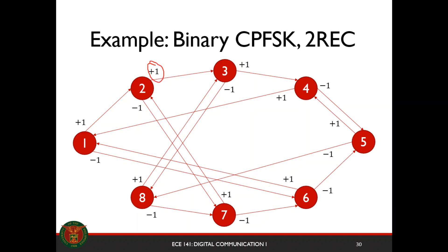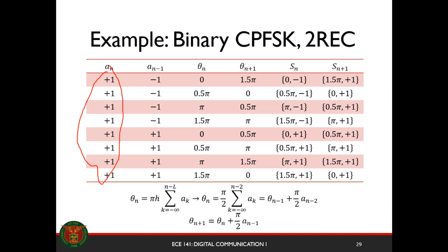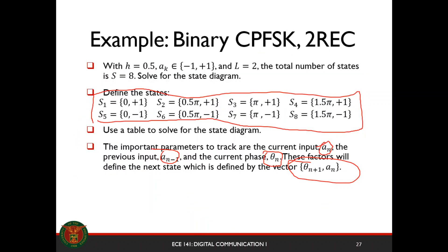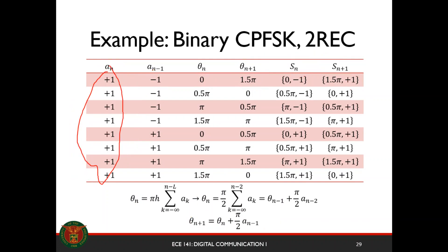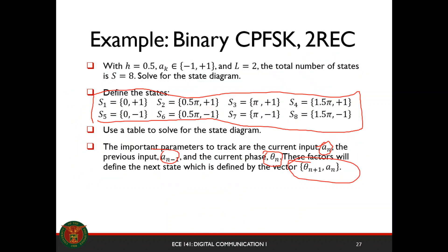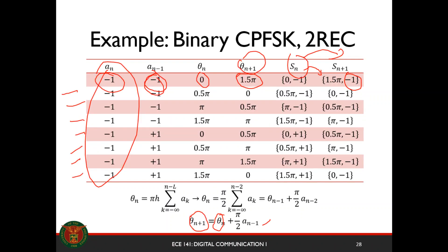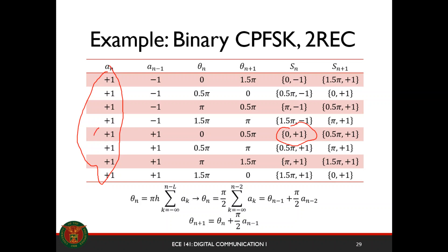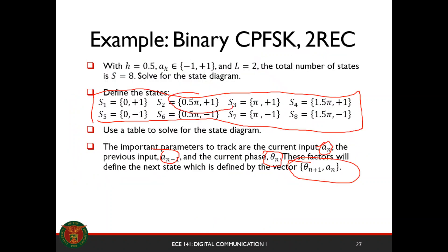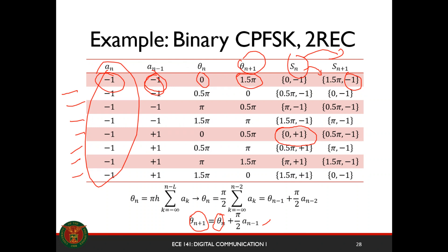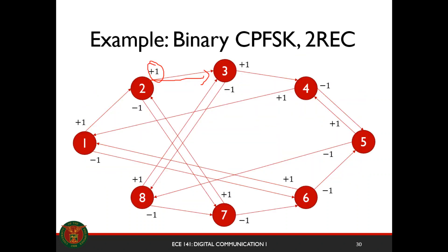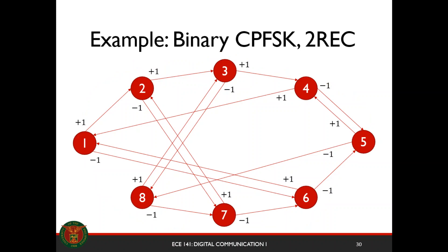You do that for all the different cases, and you'll see how the state transitions depending on the input. There's a table for when the input is negative 1 and another for when the input is positive 1. For example, from state 1 (which is 0, +1): if your input is positive 1, you transition to state 2 (0.5π, +1). You do that for all different cases to form your complete state diagram.